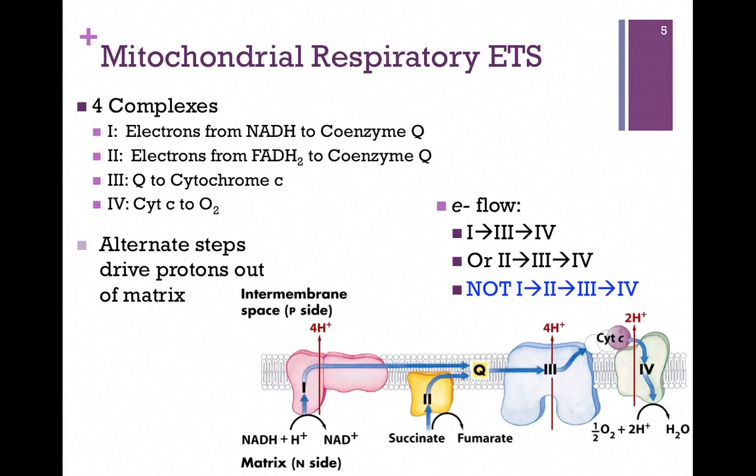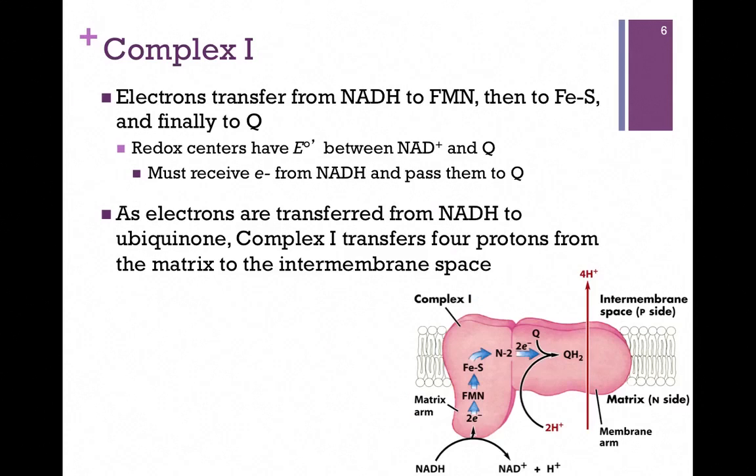In other words, electrons never flow from Complex 1 to Complex 2, and we'll see why as we move along.